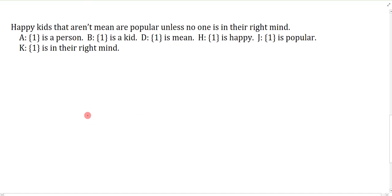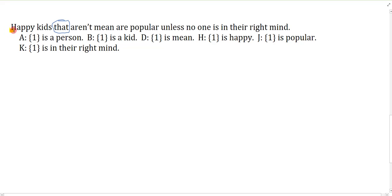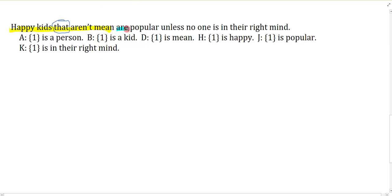Last example: 'Happy kids that aren't mean are popular unless no one is in their right mind.' Above we did a non-restrictive clause, and here we're doing a restrictive clause — 'that' without a comma. That without a comma adds more specificity to our group. So the group is 'happy kids that aren't mean,' because this helps make the group more precise. The final property is that they are popular unless no one is in their right mind — and of course we need to be careful because we have the 'unless' there.